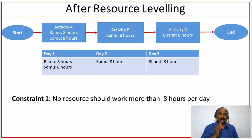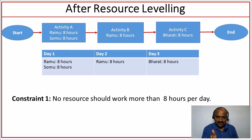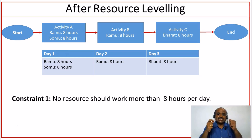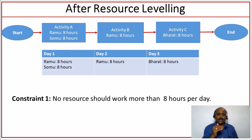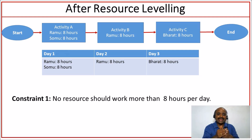The solution is that Ramu first works on Activity A for the first day. After finishing Activity A, he then moves on to Activity B. So to level the resources, we are making both Activity A and Activity B sequential. Earlier, the activities were in parallel form — the network diagram showed that both Activity A and Activity B could be done in parallel. Whereas now, Activity A and Activity B are brought into sequence just to make sure that Ramu works only eight hours on any given day.